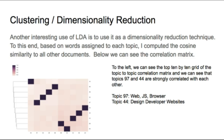On the left here we can see a snippet of this correlation matrix, where we can see that topics 97 and 44 are highly correlated to each other.